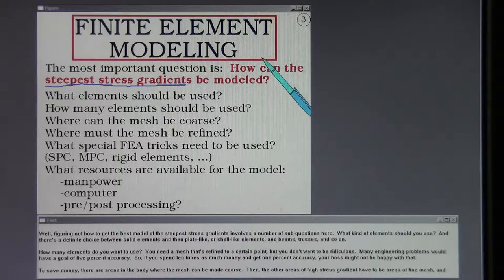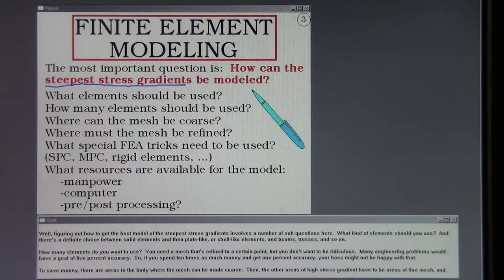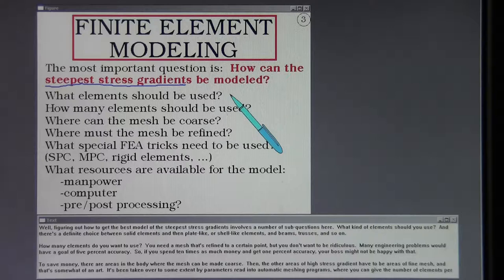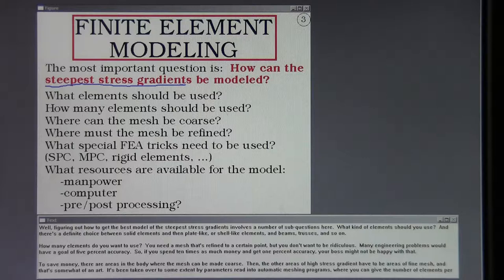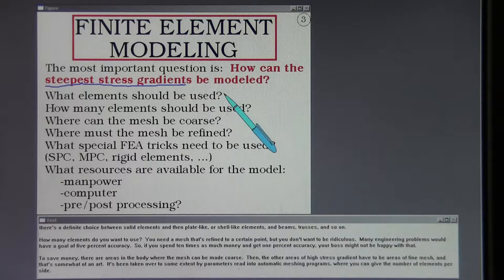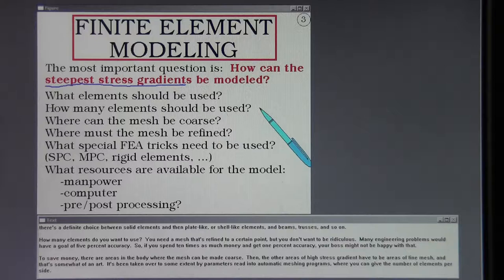Figuring out how to get the best model of the steepest stress gradients involves a number of sub-questions here. What kind of elements should you use? And there is a definite choice between solid elements and then plate-like or shell-like elements and beams, trusses, and so on. How many elements do you want to use? You need a mesh that's refined to a certain point, but you don't want to be ridiculous.